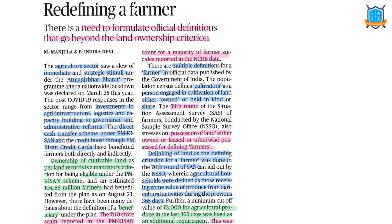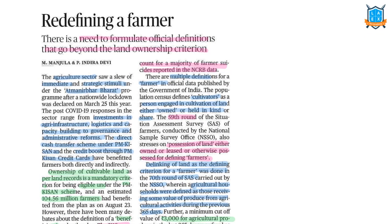The next article is 'Redefining a Farmer.' A farmer is not only the person who owns or possesses land — a farmer is also a person deriving income from agriculture. We want to broaden the definition of agriculture. Another reason this is required: there was a scam with respect to PM Kisan Yojana — in Tamil Nadu, a 110 crore scam happened where, despite eligible beneficiaries, brokers ensured real beneficiaries got no benefit. After COVID, the agriculture sector got a major push from the government.